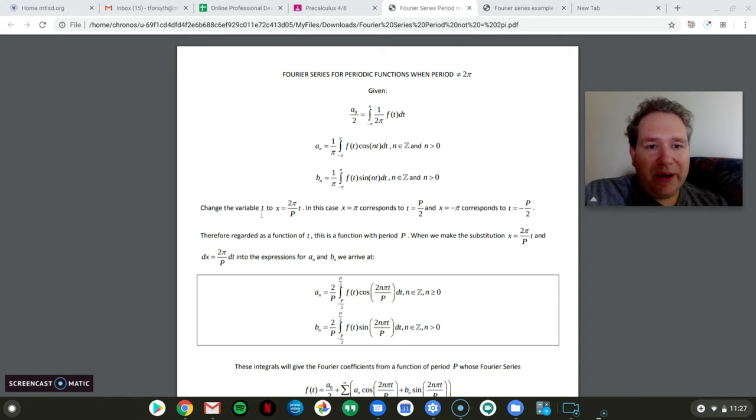And this is the change of variable I'm talking about. So instead of t, change it to x equals 2π over capital P for period t. And when I say in this case x equals π corresponds to t equals capital P over 2, what I mean is substitute π in for x here and resolve, and you get that t equals capital P over 2.